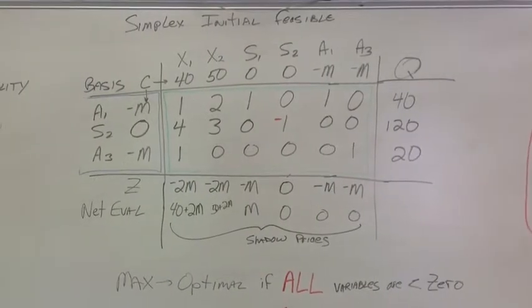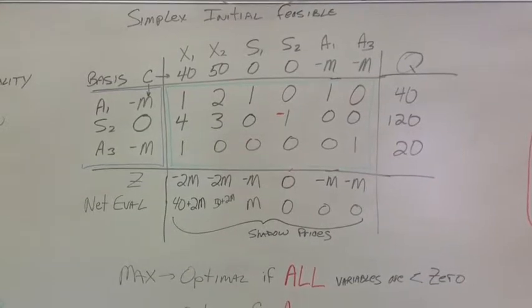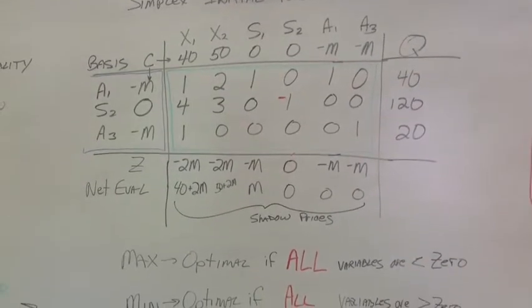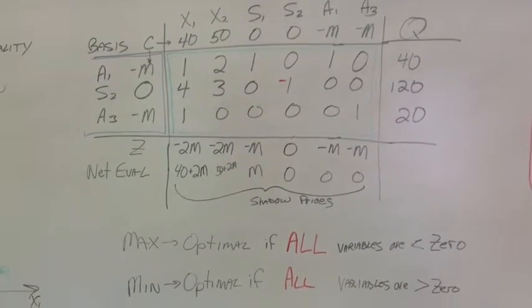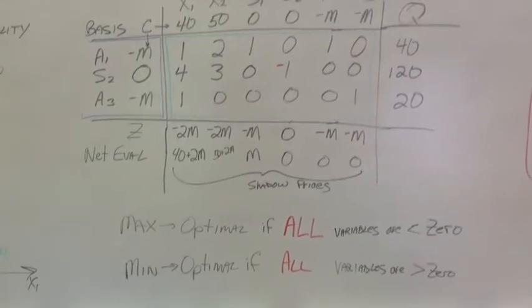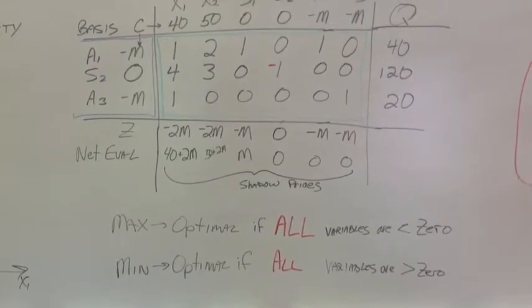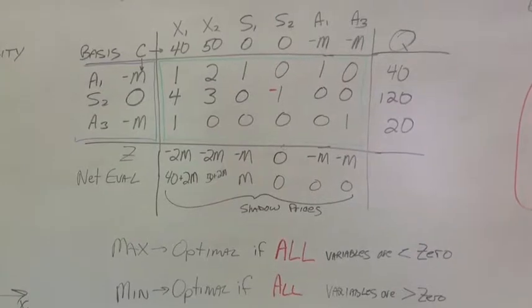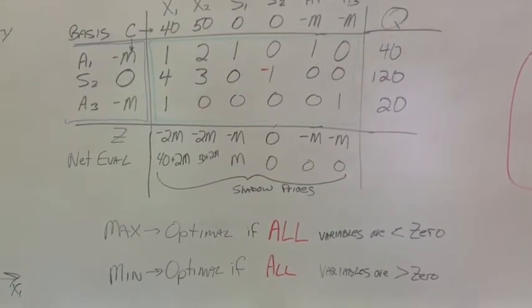All right, the way we check for optimality or if we have an optimal extreme point is by the net evaluation row. The net evaluation row, the area underneath the variables, are called shadow prices.